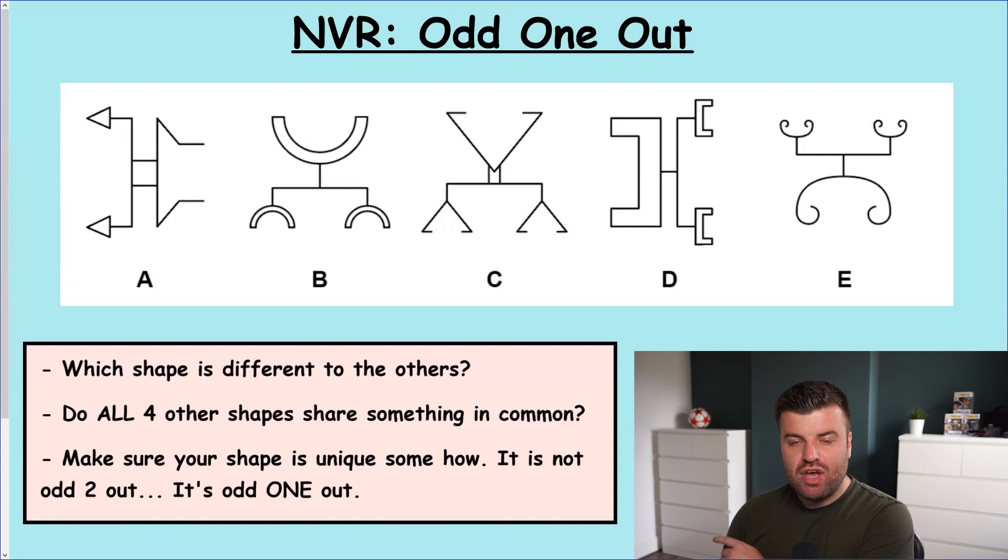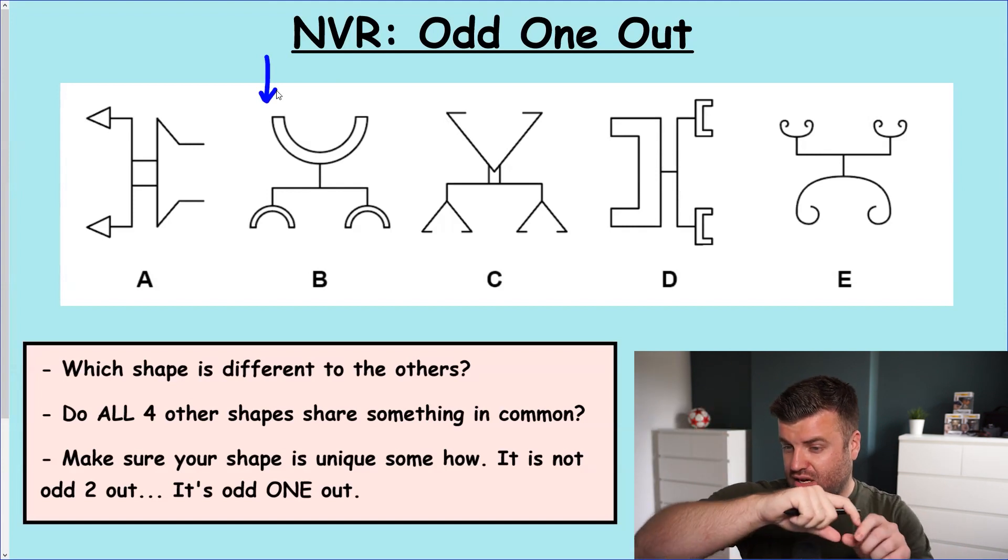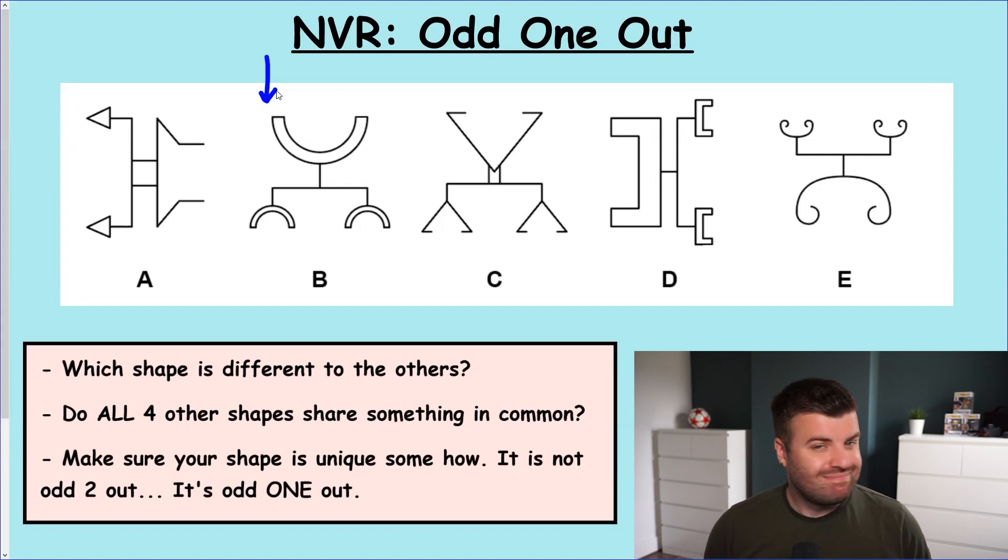Let's dive into the first question. You're given five shapes and it's our job to select the shape which is the odd one out. The best way to think about it is in our pink box. The first sentence says which shape is different to the others. That's quite obvious. However, that won't always get you the right answer. For example, let's look at B. We could say it's the only shape with this arch, the only one that has that arc shape coming over. It must be the odd one out. No, it doesn't work like that. This is where the second sentence comes in really handy. Do all four of the other shapes share something in common? This is what's going to define the odd one out. We need to find a shape that's odd because the other four have something that is the same.